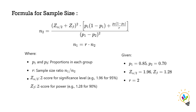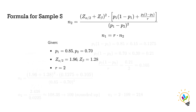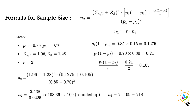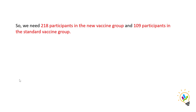Substituting these values into the formula — p1 equals 0.85, p2 equals 0.70, z-alpha/2 equals 1.96, z-beta equals 1.28, r equals 2 — we calculate n2 as approximately 108.36, which rounds up to 109. Since n1 equals 2 times n2, n1 equals 2 times 109, which is 218. So we need 218 participants in the new vaccine group and 109 in the standard vaccine group.